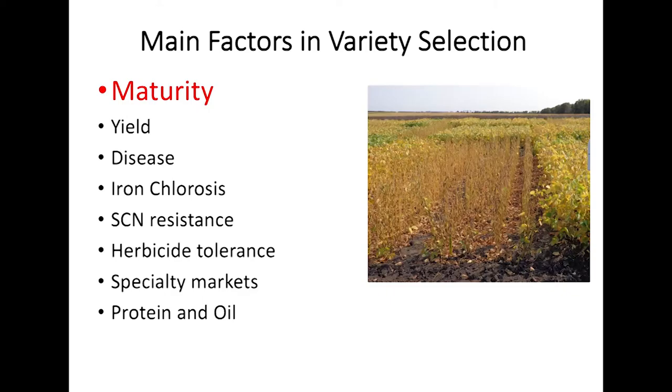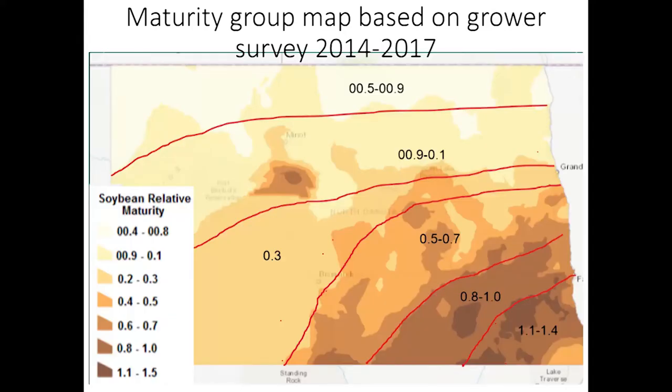Each area has a specific range for maturity, and if we want to maximize our yields, that is to select a variety that is appropriate for our growing region and one that has the longest maturity possible. However, at the end of the season we typically have a frost, so we need to make sure the maturity range is such that it will mature before the frost.